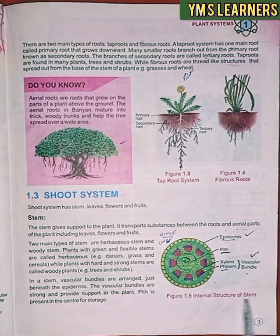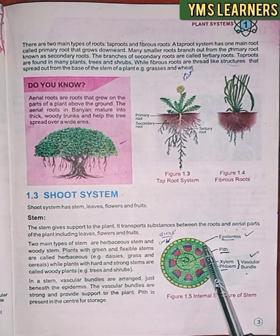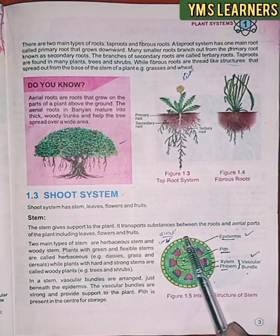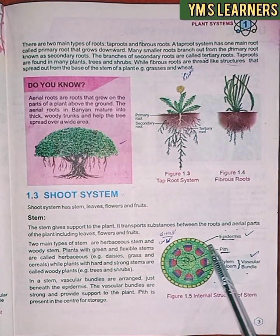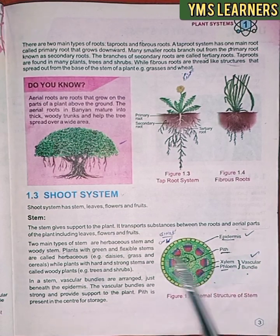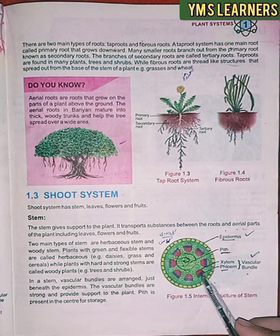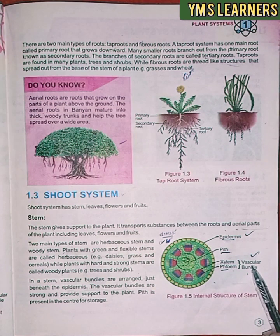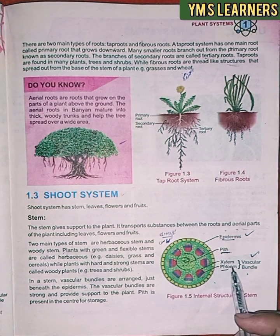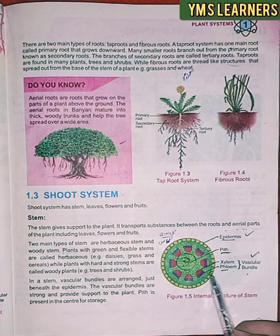The internal structure of the stem includes the epidermis as the outermost protective layer. The pith is present in the center for storage. Xylem transports water and minerals from roots, while phloem transports food prepared by the leaves throughout the plant. These are shown in the diagram of the internal structure of the stem.